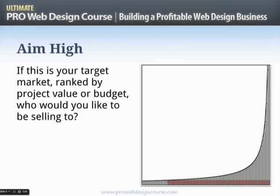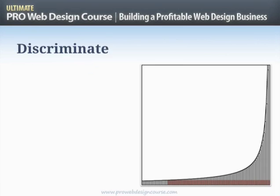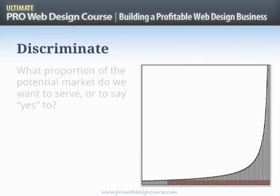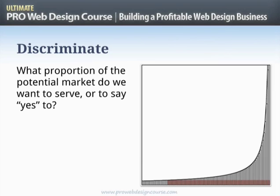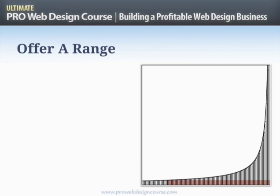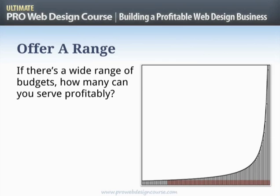Point number two: aim high. There are a lot of companies with small budgets, but some have very high budgets and very high project values. Which end of the graph do you want to be selling to? Point three: discriminate. What proportion of the market do you want to serve, and which area of the 80/20 curve do you choose to say no to? Point four: consider offering a range of services, because the distribution of budgets means you can potentially serve multiple levels profitably.